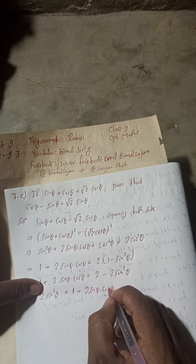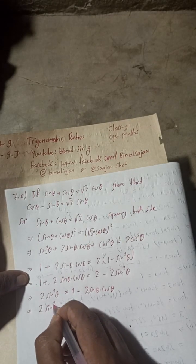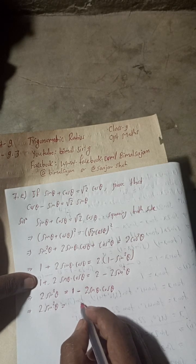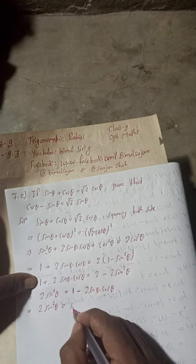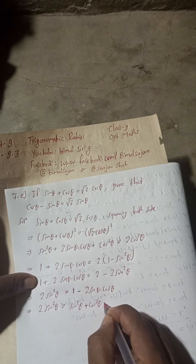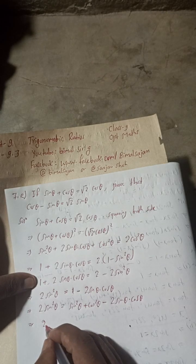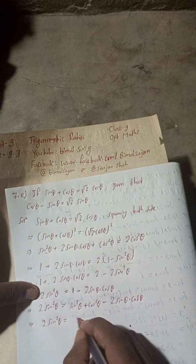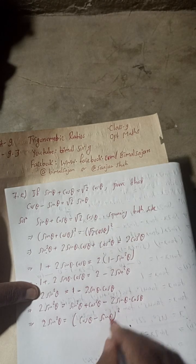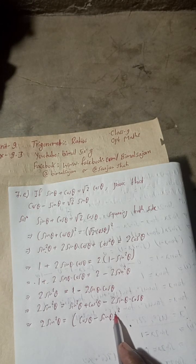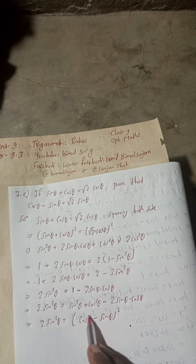So we have 2sin²θ − 2 sin θ cos θ. Now the right side: we replace 1 with sin²θ + cos²θ, giving sin²θ + cos²θ − 2 sin θ cos θ. This is the formula for (cos θ − sin θ)². Note we take cos θ first, then sin θ, which gives us the correct form.